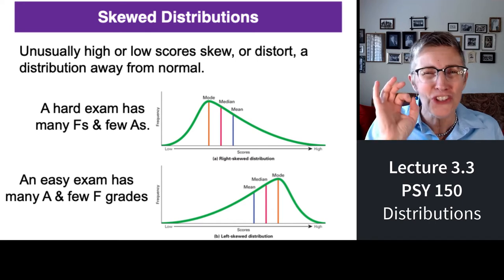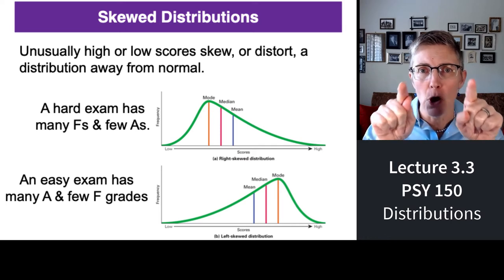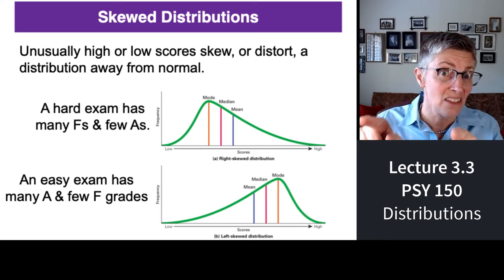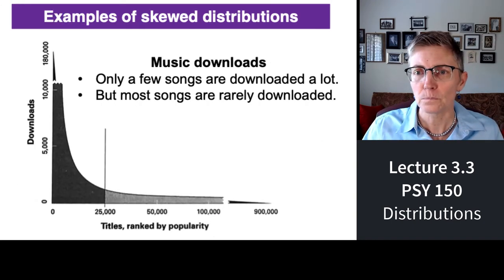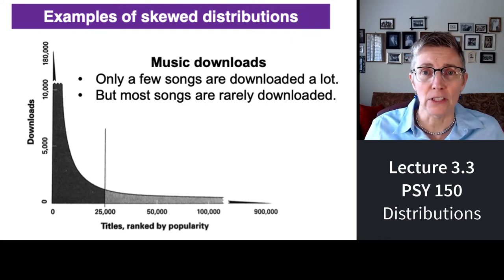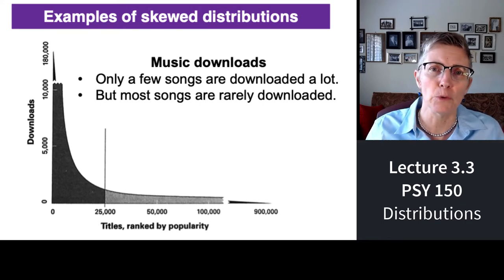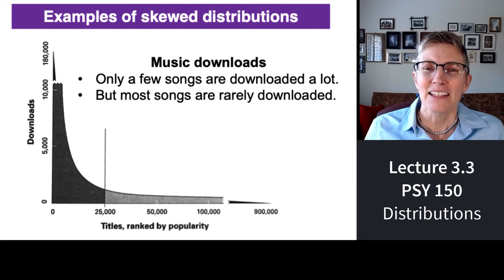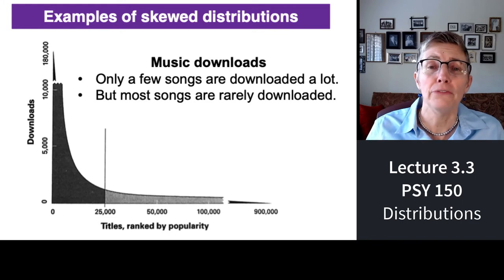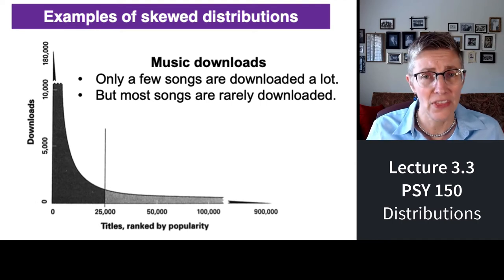If an exam is just right, then the distribution should be normal, right? So you should have like most students getting maybe B's and C's, and then it drops off from there. Here's an example of a skewed distribution in the real world. Music downloads. Some people think, oh, I'm just going to make a million bucks by putting my music out there, and people will download it and pay me, and that's great. Except the problem is the distribution of music downloads is skewed. A few songs are downloaded a lot by a lot of people. Most songs are almost never downloaded. So that's a skewed distribution.